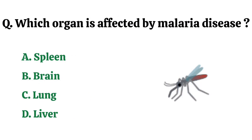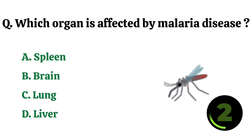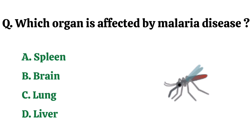Which organ is affected by malaria disease? The correct answer is option D. Liver.